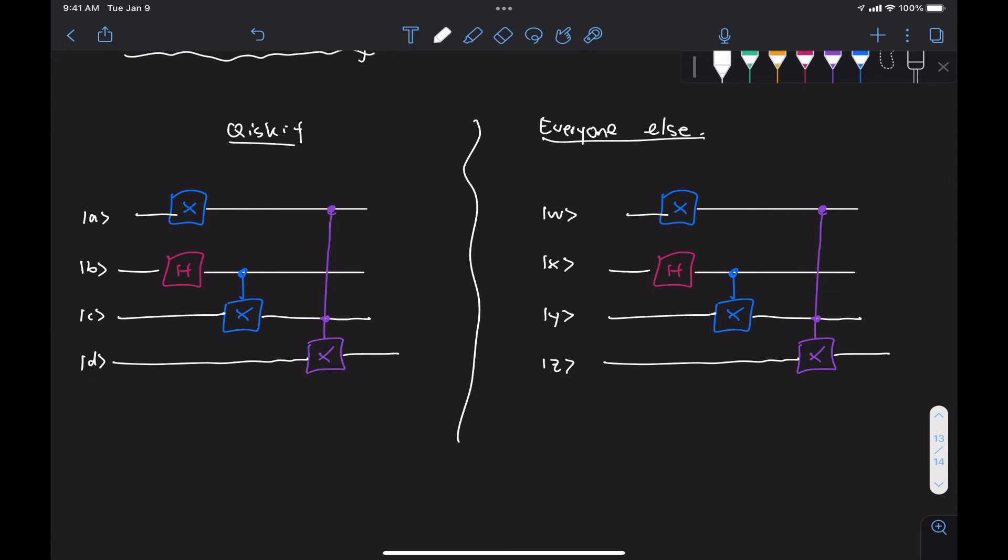So in Qiskit, if you have your qubits with some order going from top to bottom, so let's say here we're labeling things from top to bottom, the way you organize the state vector or the ket representation of the input state will be going from actually from right to left. So we would have here a state vector D C B A.